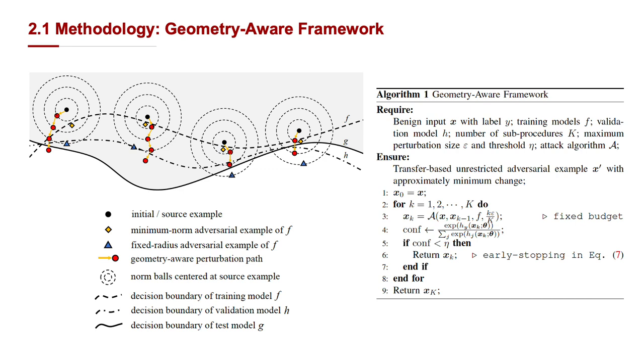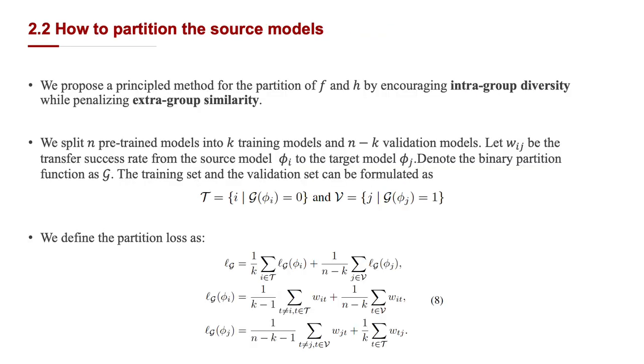Note that the output of our GA framework is related to the choice of the training model F and the validation model G. Thus, it's important to figure out which partition of the source models performs better. And our answer is, as we define the partition loss, lower partition loss will lead to better performance.